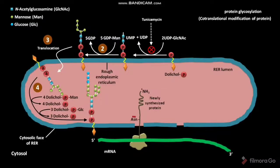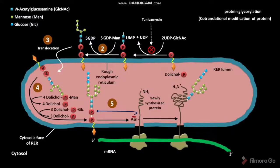In the RER lumen, the newly synthesized protein has an ASN, or asparagine, amino acid residue. In the next step, two electrons from the ASN residue are transferred to the dolicol pyrophosphoryl oligosaccharide — this is the fifth step. Then, the 14-residue oligosaccharide of the dolicol pyrophosphoryl oligosaccharide is transferred to the ASN residue of the growing nascent polypeptide chain from the ribosome. An N-glycosidic linkage between the side chain amide of the ASN residue and the 14-residue oligosaccharide is created, so it is called N-linked glycosylation. This is the sixth step, and it occurs within the RER lumen.